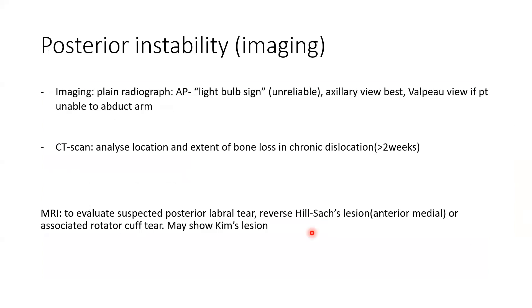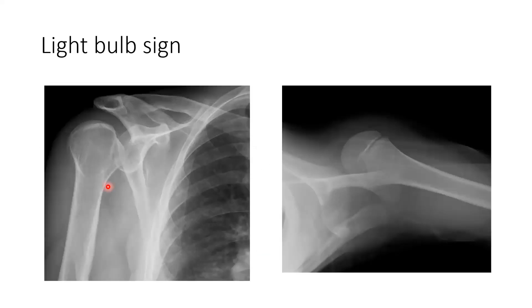CT scan is used to analyze the location and extent of bone loss in chronic dislocation — anything more than two weeks is considered chronic. MRI is used to check for labral tear, reverse Hill-Sachs lesion, rotator cuff tear, and can also demonstrate Kim's lesion. The light bulb sign on AP view and axillary view showing posterior dislocation, plus the Velpeau view position, are key imaging findings.